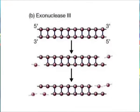An enzyme isolated from E. coli called Exonuclease III digests only one strand of the double-stranded DNA molecule. It removes nucleotides from the 3' terminus of the strand, thus leaving protruding 5' overhangs. Exonuclease III is used for generating single-stranded templates.